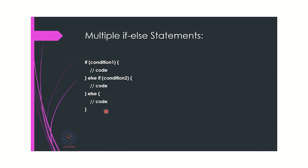Now let's look at the multiple if-else statement, which is also inside the if-else family. We use multiple if-else when we want to check multiple conditions. If the first condition is true, that part of code is executed. If not, it goes to the else-if statement to check the next condition. If that is true, that code is executed. If both conditions are not true, then the final else part is executed.